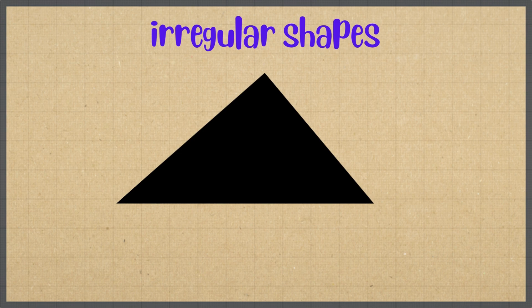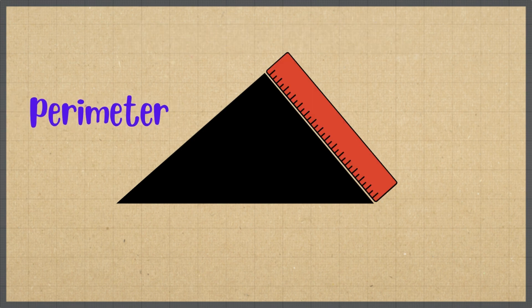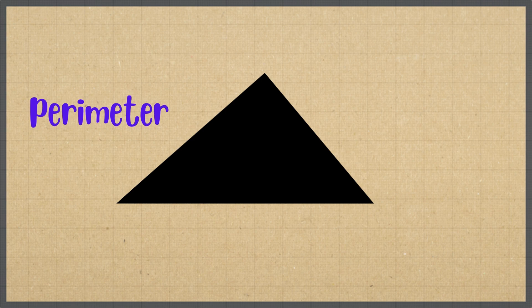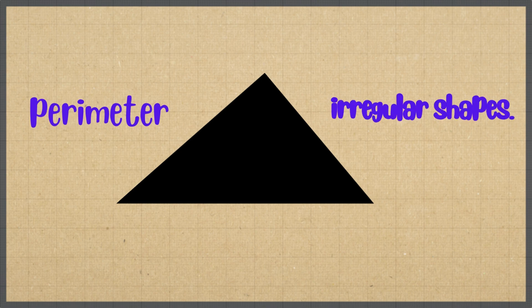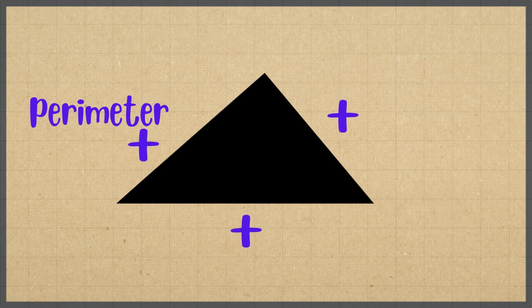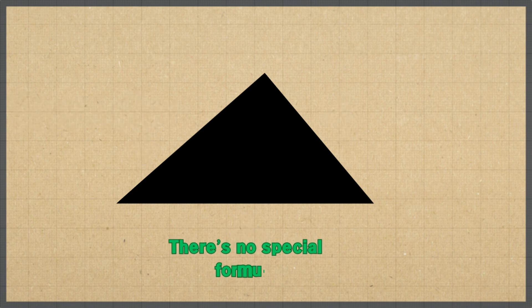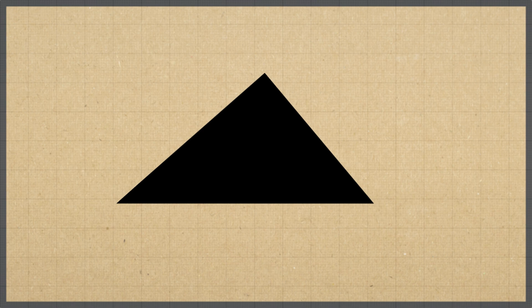We'll see how to find the perimeter when all sides are completely different. Not all shapes have equal sides — some have different side lengths, and we call these irregular shapes. To find the perimeter of an irregular shape, we simply add up all the side lengths. There's no special formula, just add everything together.